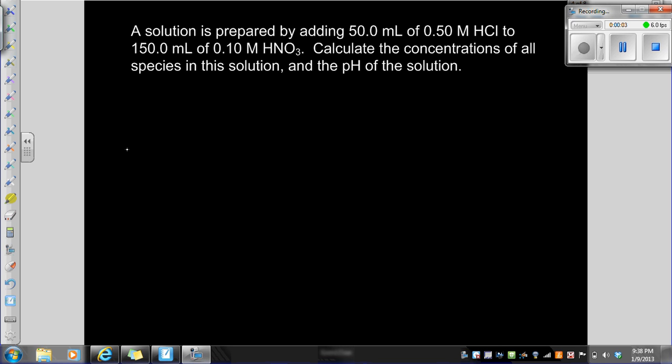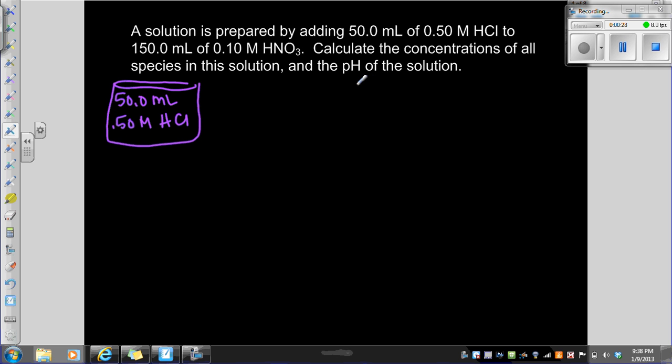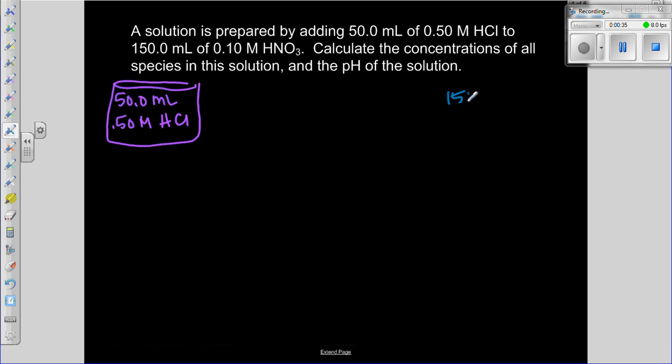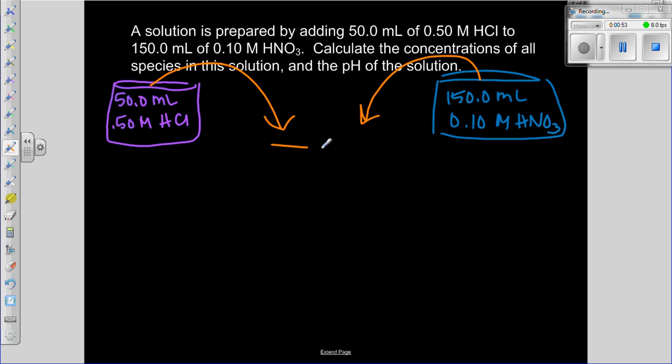Okay, this is a challenge video for calculating pH. What we've got is 50 milliliters of 0.50 molar HCl in a beaker, and then we've got 150 milliliters of 0.1 molar nitric acid in another container.